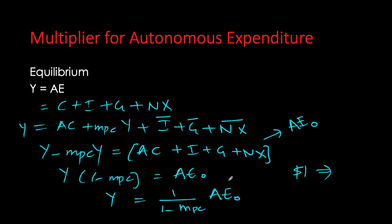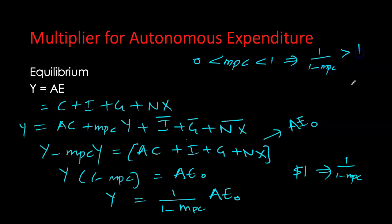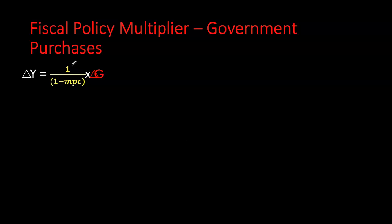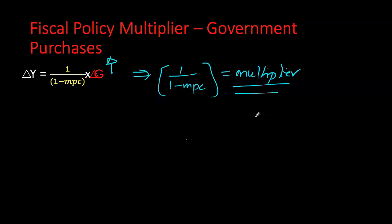This tells us that every time autonomous expenditure increases by a dollar, real GDP increases by 1/(1−MPC). Since MPC is between zero and one, this term is always greater than one. With MPC = 0.8, the multiplier equals five — for every dollar increase in autonomous expenditure, real GDP increases by five dollars. Isolating the effect of government purchases specifically, we write: ΔGDP = [1/(1−MPC)] × ΔG. So when G increases by a dollar, real GDP increases by the multiplier. This 1/(1−MPC) is our multiplier.